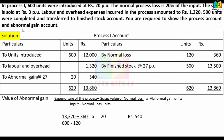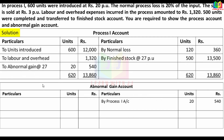Now the abnormal gain account is prepared. Abnormal gain is 20 units at Rs.27 per unit = Rs.540. In the abnormal gain account, we debit Process 1 with 20 units valued at Rs.540.